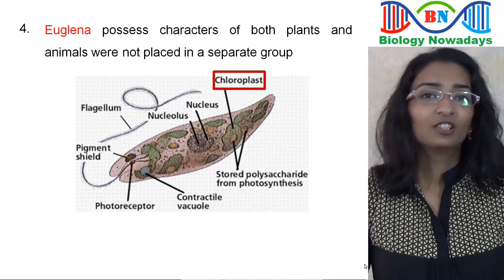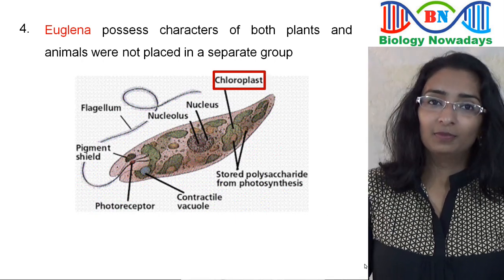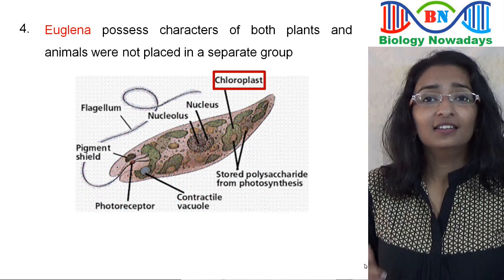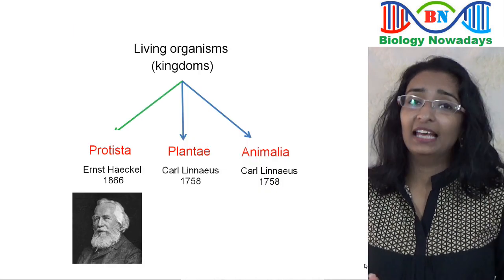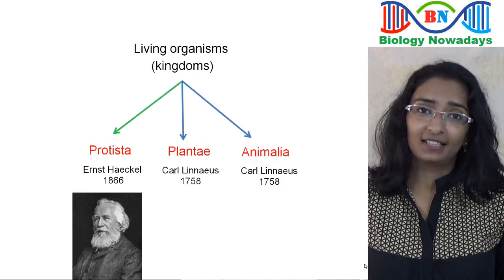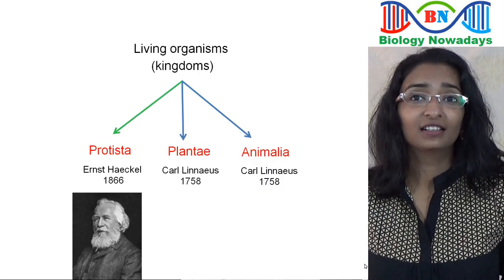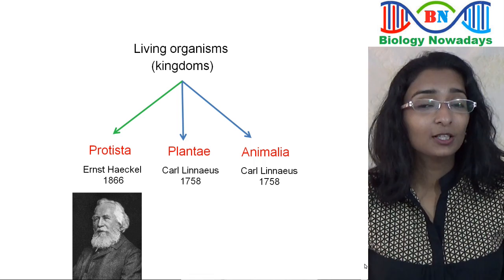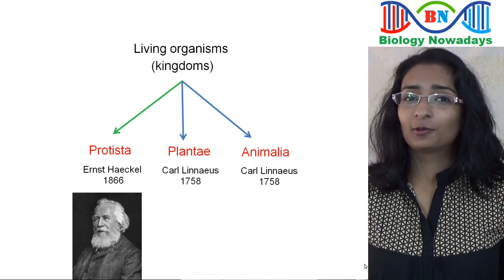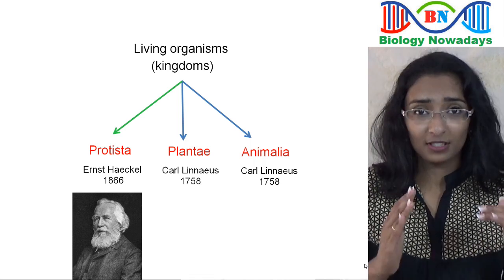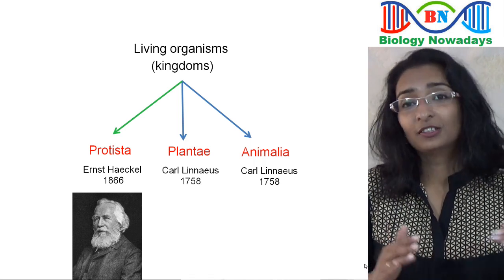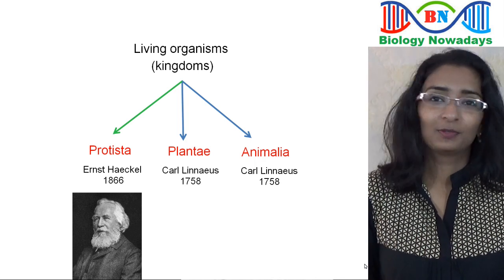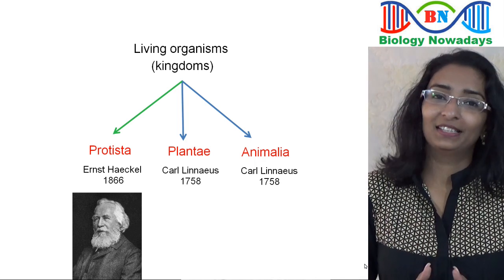To solve some of the problems in Linnaeus's classification, Ernst Haeckel in 1866 proposed a third kingdom, Protista, which included any microorganism that was not a plant nor an animal. But the problems were not solved completely.